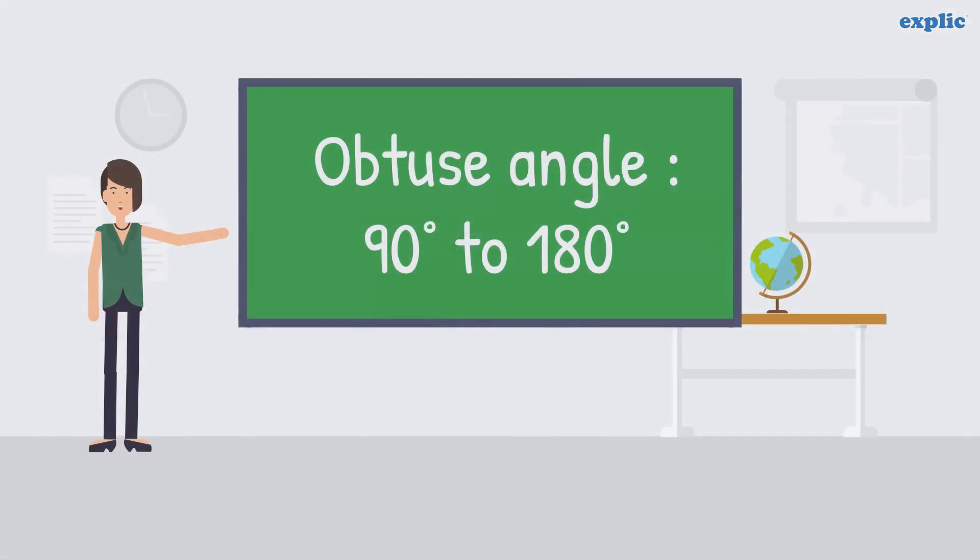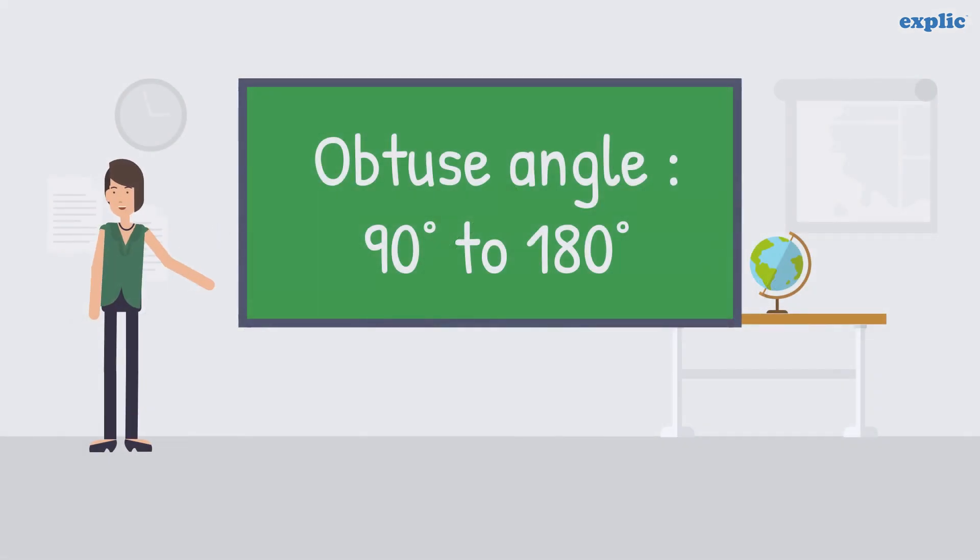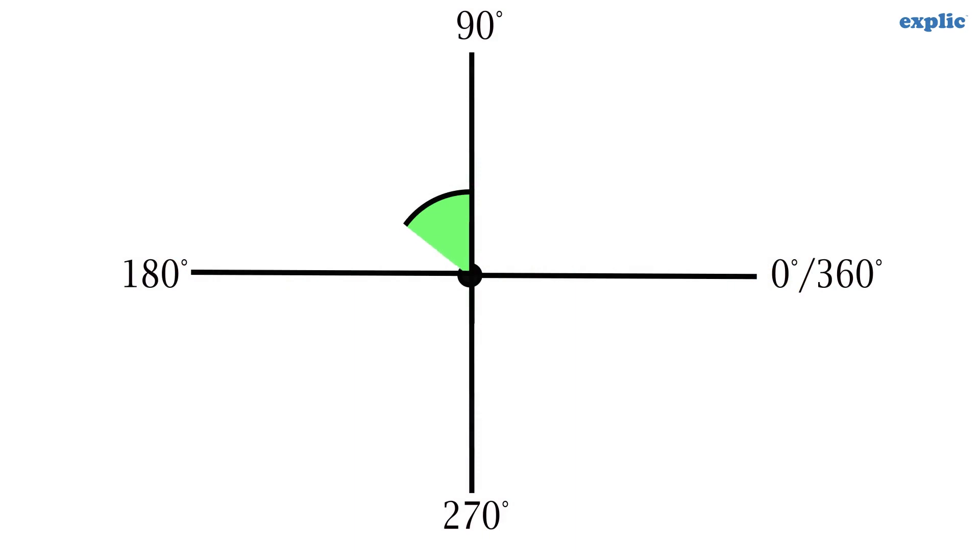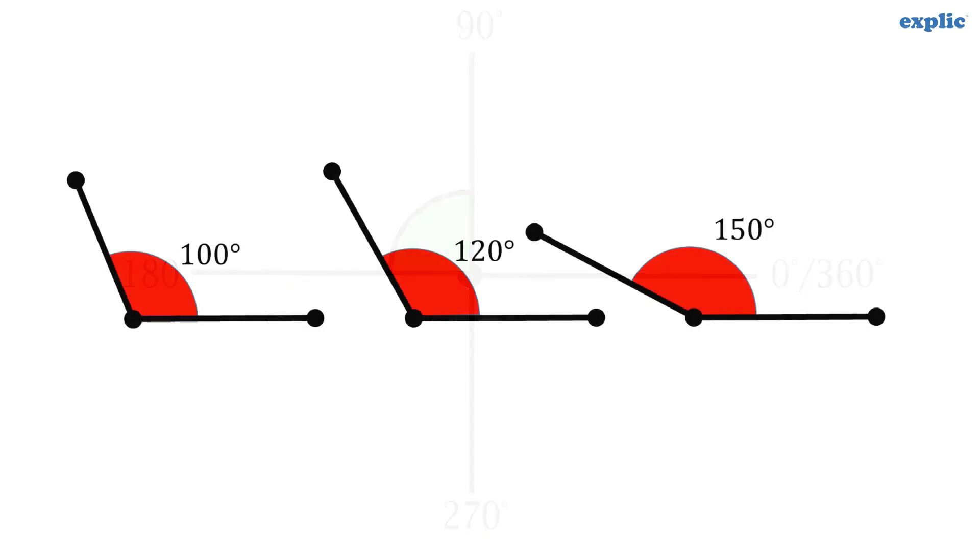An obtuse angle is an angle between 90 degrees and 180 degrees, such as 100 degrees, 120 degrees, and 150 degrees.